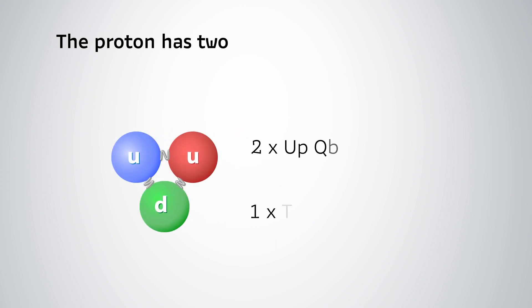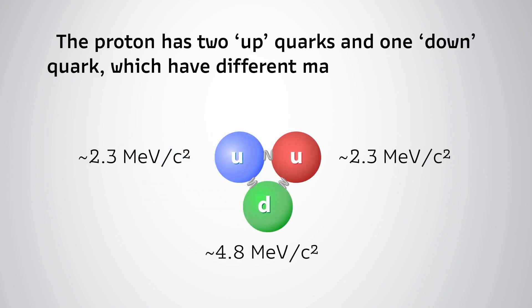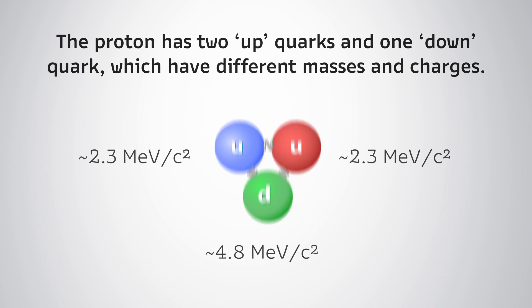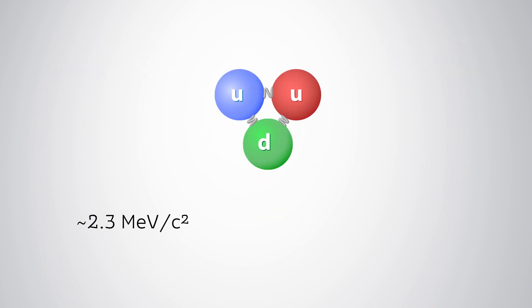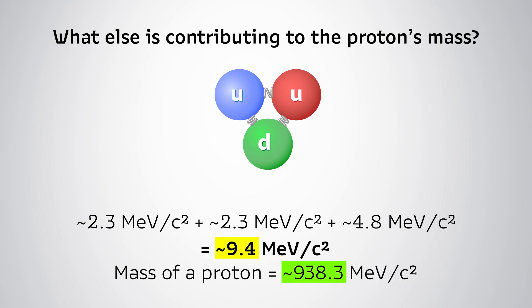The proton has two up quarks and one down quark, which have different masses and charges. However, when we add up the masses of these three individual quarks, we get a lighter mass than the mass of a proton. So, what else is contributing to the proton's mass?